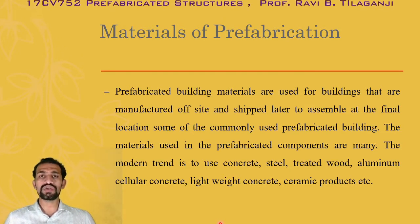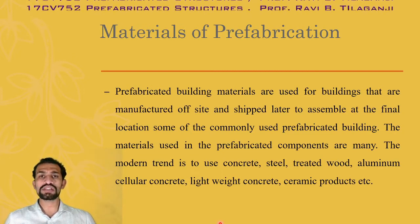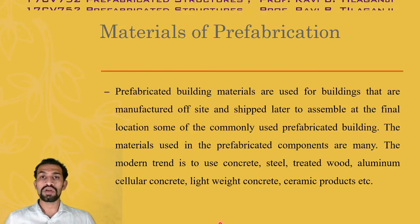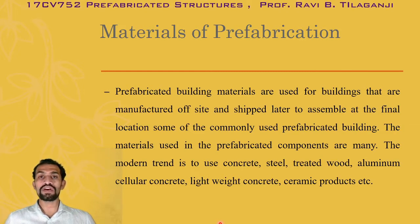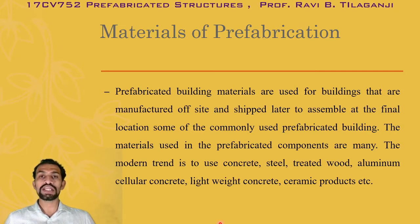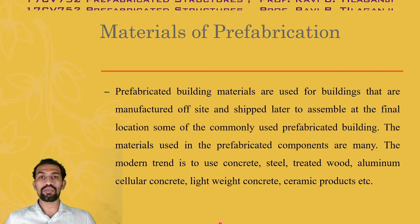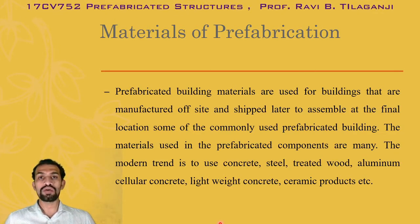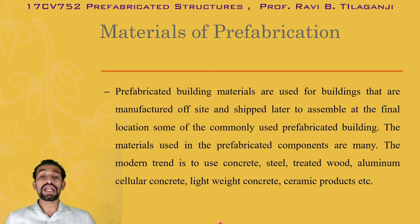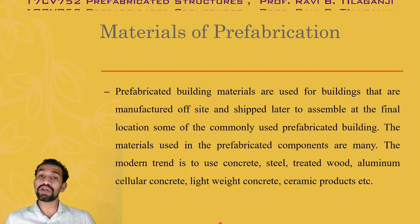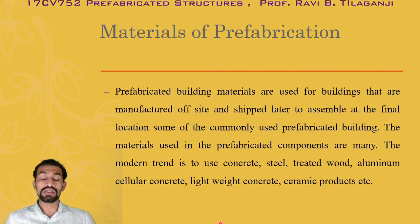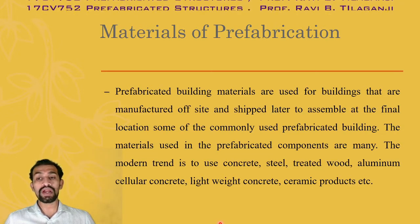Materials which are usually available near us, and sometimes not available near us, need to be procured from far distances. If a site is at a remote place, we need to go to that remote place and procure the material for construction of the building. Buildings that are manufactured off-site and shipped later to the site, or assembled at the final location, are some of the commonly used prefabricated buildings.